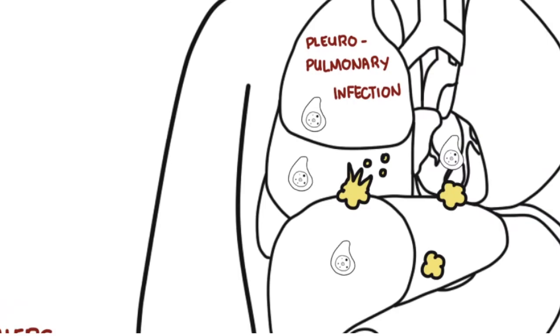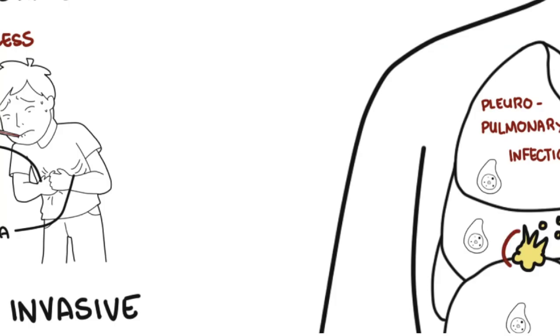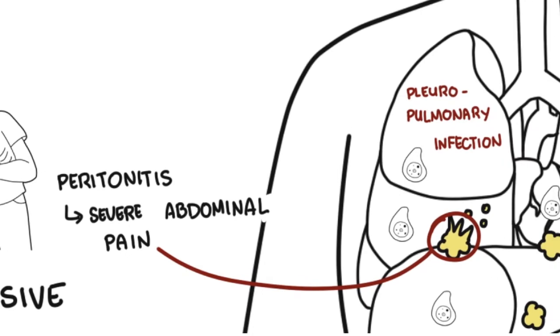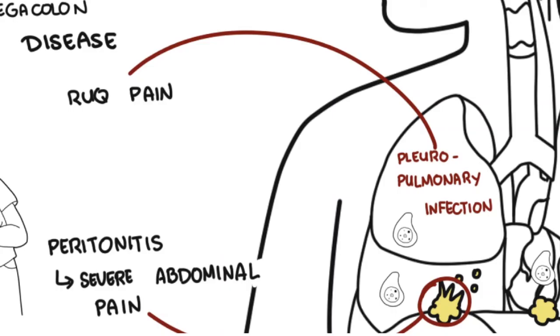Complications of a hepatic abscess include rupturing of the abscess. If the abscess ruptures, it can lead to peritonitis with severe abdominal pain. If the abscess ruptures into the pleura of the lungs, it can cause pleuro-pulmonary infection, causing right upper quadrant pain, cough, hemoptysis, and dyspnea.